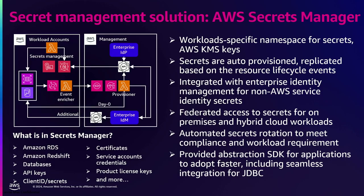The secrets managed include those from AWS RDS, AWS Redshift, regular databases hosted on EC2s, API keys, client IDs, client secrets, license keys, and certificates. You need to securely manage and rotate them in a safe and sound manner. To do that, we use AWS Secrets Manager.